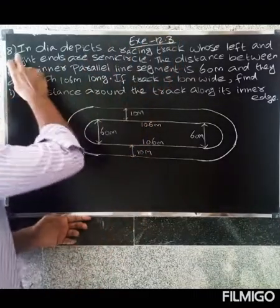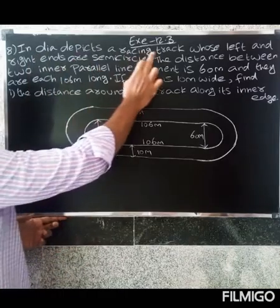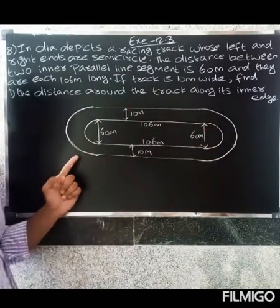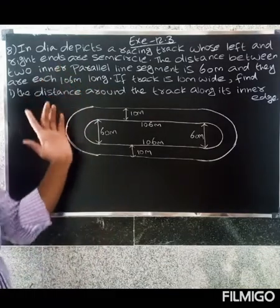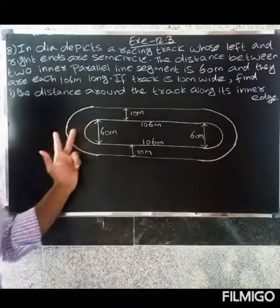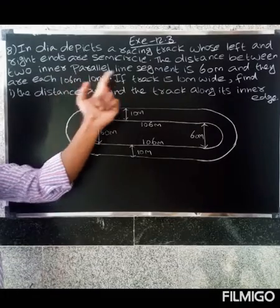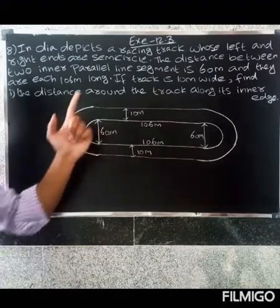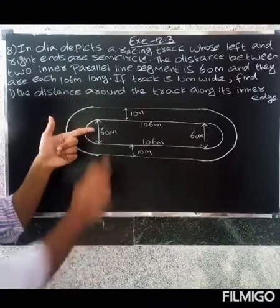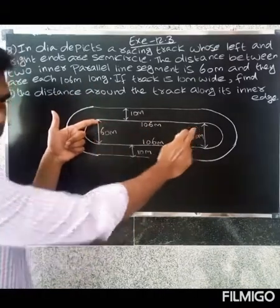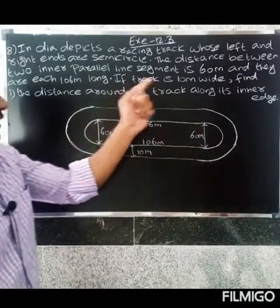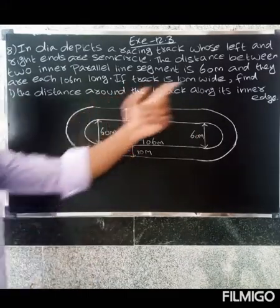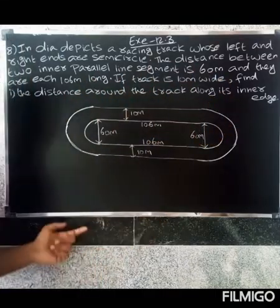Welcome. Exercise 12.3 - the diagram depicts a racing track whose left and right ends are semicircular. The distance between the two inner parallel line segments is 60 meters, and they are each 106 meters long. The track is 10 meters wide. Find the distance around the track along its inner edges.